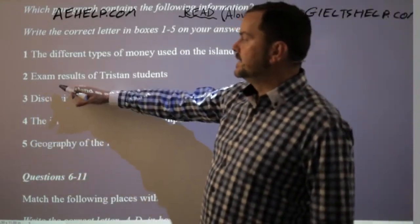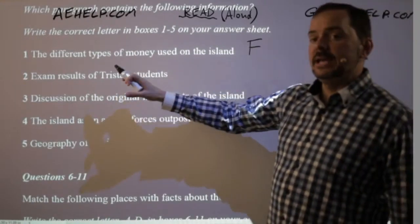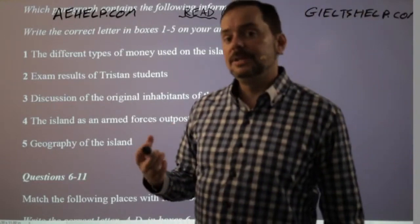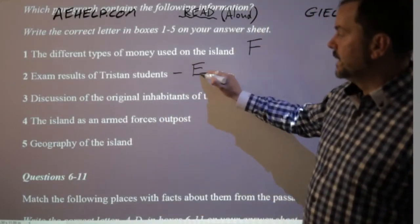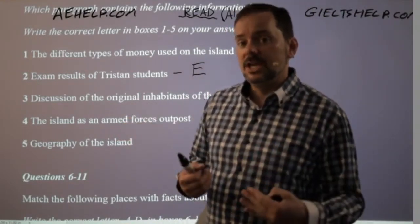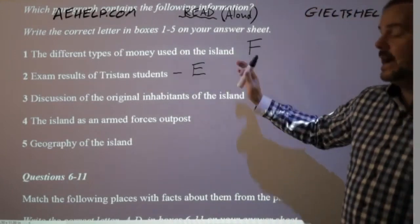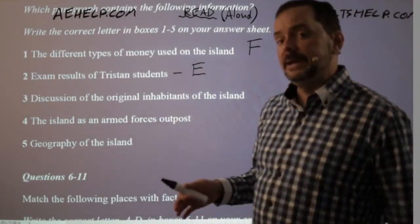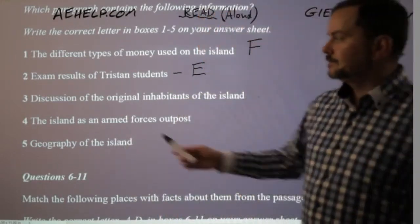Question 2: 'exam results of Tristan students' — this is about education. Because we just looked at D, E, and F, we know the answer is E. D was about surnames, E was about education, F was about money. Be careful though — you do have to read the passage, not just skim, in case another paragraph also touches on education.